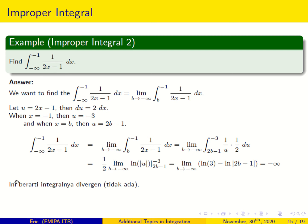Since ln 3 is just a constant and we are subtracting infinity, the result is minus infinity. So in this case, the integral diverges — it does not converge. Don't forget: we are dealing with limits, so sometimes the limit exists and sometimes it does not.